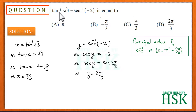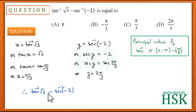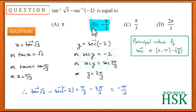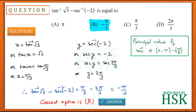Now I have both values: tan⁻¹(√3) = π/3 and sec⁻¹(-2) = 2π/3. Substituting into the expression: π/3 minus 2π/3 = -π/3. This matches option B, so the correct answer is option B.